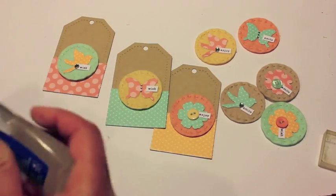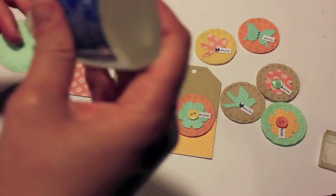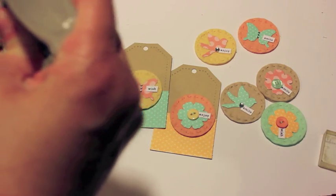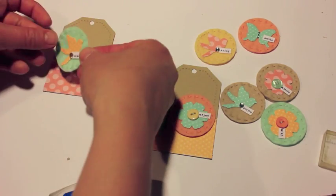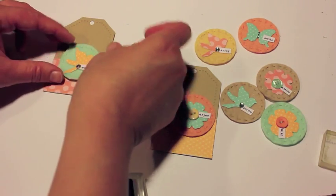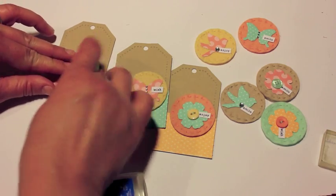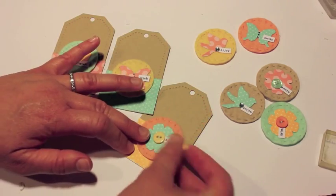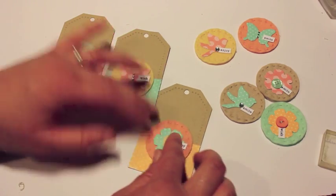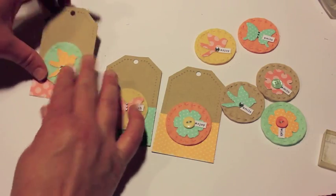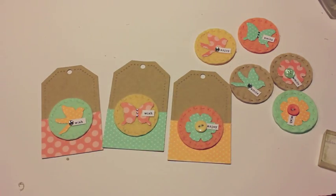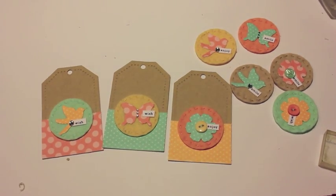And then to attach these to the tag again you could use whatever adhesive you want. You could run it through a xyron machine. I'm going ahead and using the zip dry glue just because with the felt and the cardstock I know it's going to stick and it's not going to come apart. And finally get that last felt badge attached to that tag and I have three tags ready to go and I have extra embellishments to use. I can make more tags or use them on a future project.